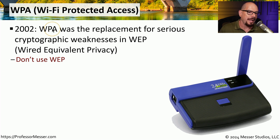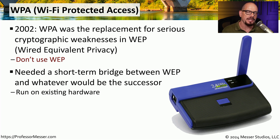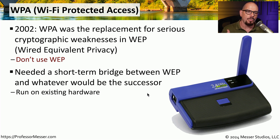That replacement was known as WPA, or Wi-Fi Protected Access. WPA was implemented as a temporary stopgap between the insecure WEP and a more secure version of WPA. This first iteration of WPA was designed to work on exactly the same hardware as that older style WEP that we were replacing, but we knew that we would need enhanced security not currently available in this initial WPA.